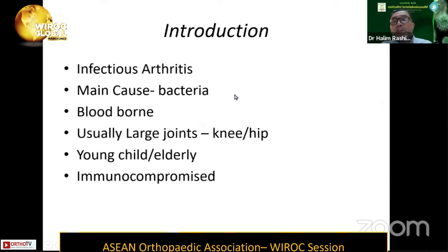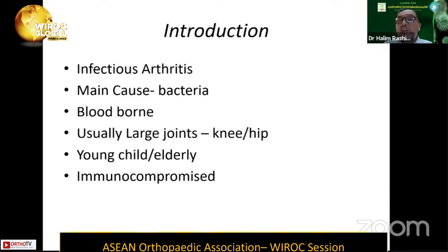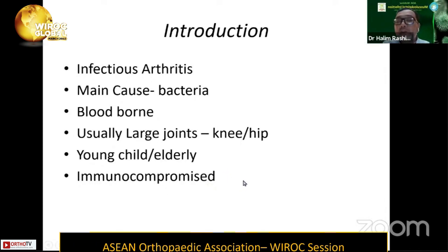In children, the hip is more common to be seen, while in adults the knee will be more common. In terms of demographics, it mainly affects young children as well as the elderly, and also patients who are immunocompromised, such as diabetics and those with immune disease.